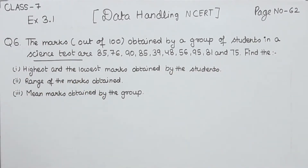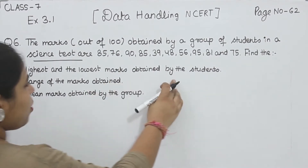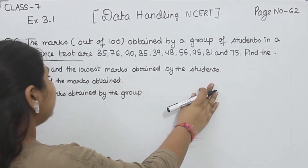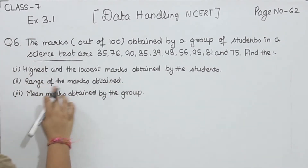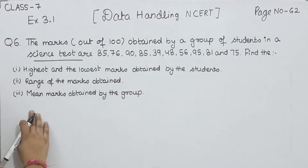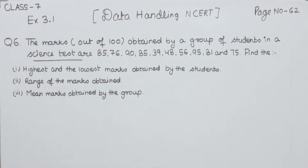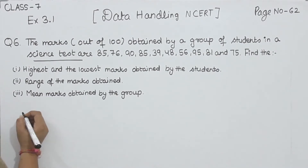Find the highest and the lowest mark obtained by the student. Now find the range of the marks obtained and the mean mark obtained by the group. So we have to find out these. First, we will arrange these in ascending order.